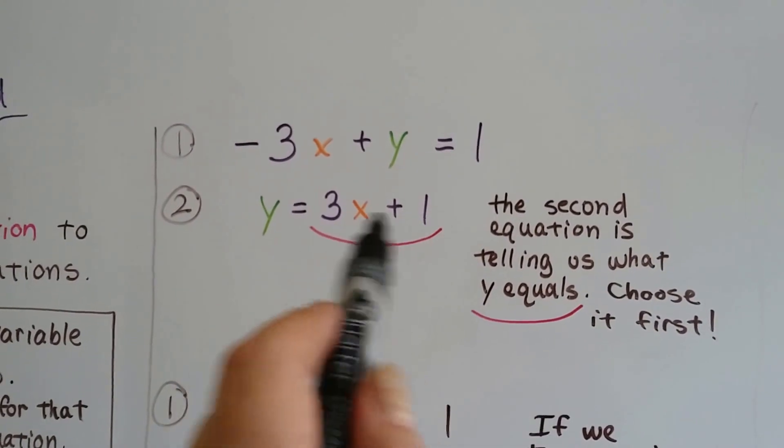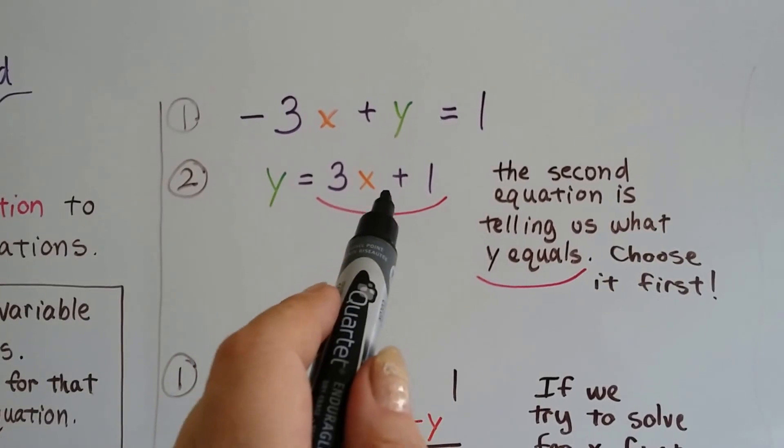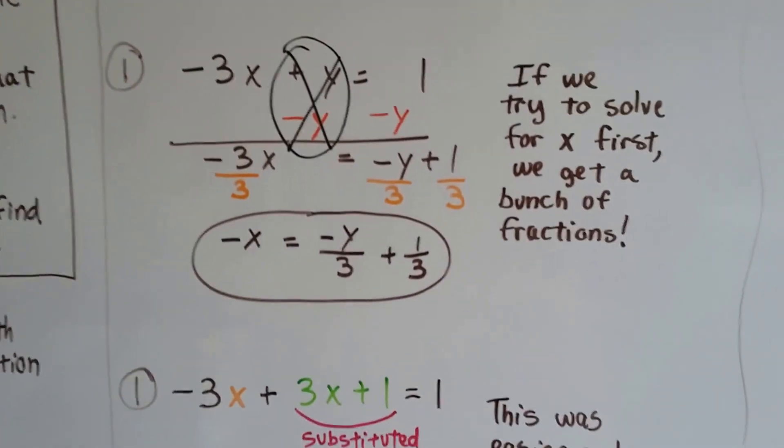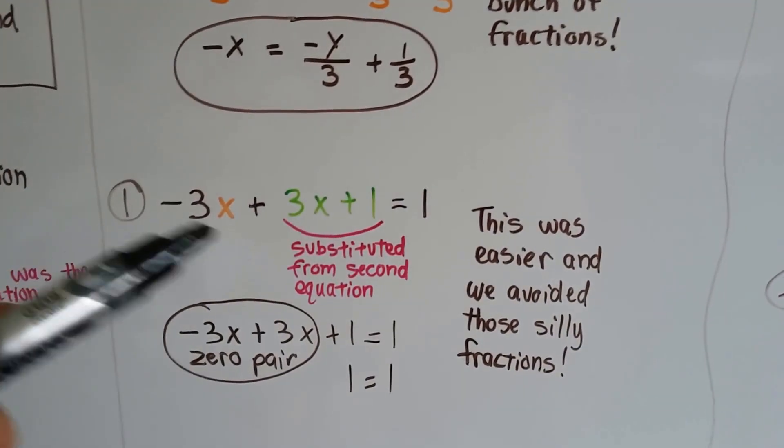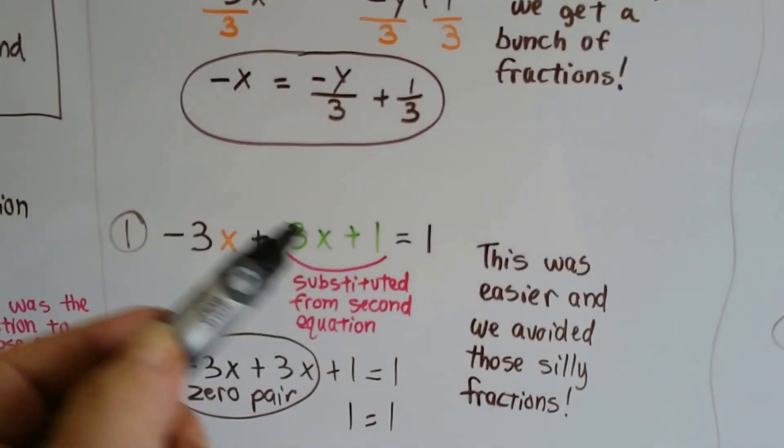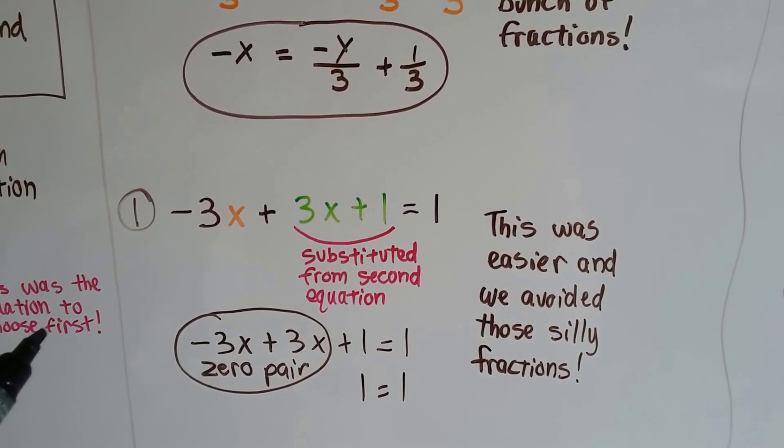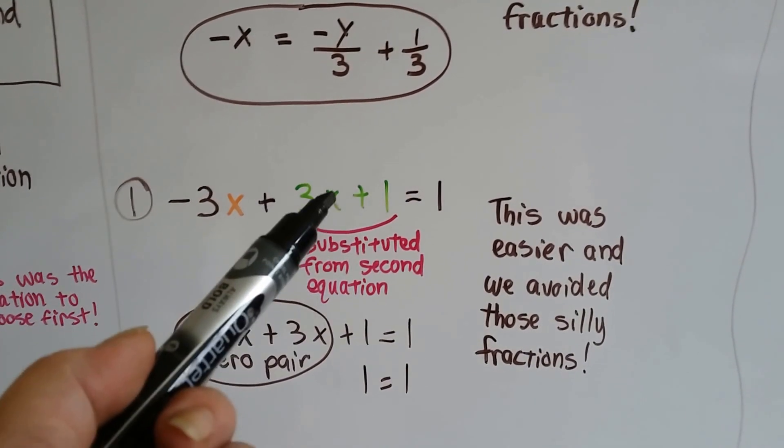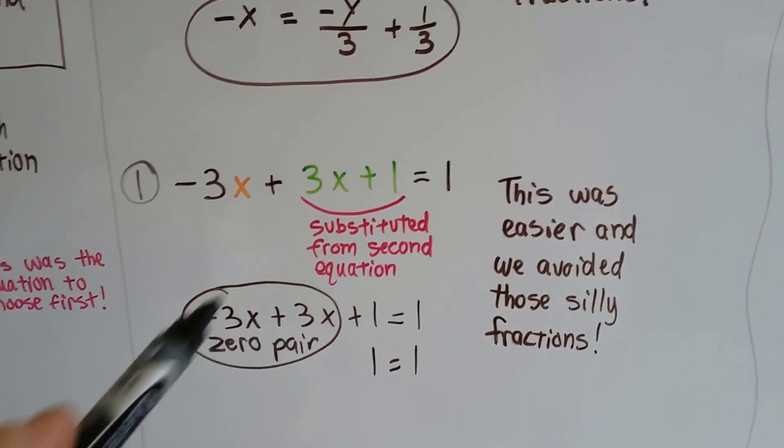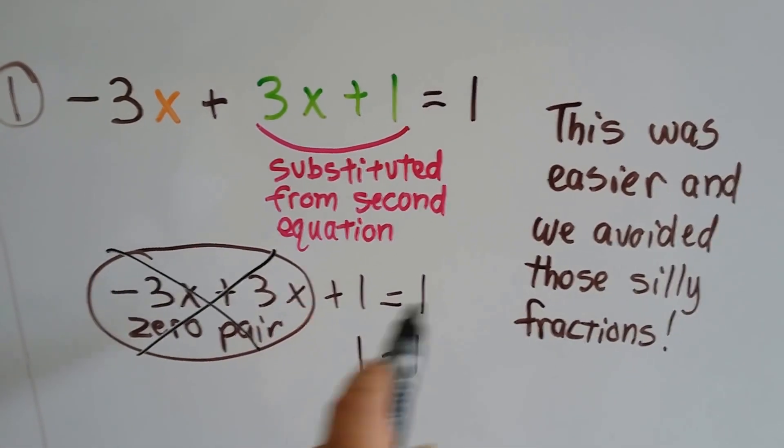So by choosing this one, it was smart to choose it first because not only was it telling us that y was equal to this, but if we had gone with this one and tried to solve it for x, we would have gotten a bunch of fractions. So this is easier. By substituting this 3x plus 1 right here for y from the second equation, we avoided those silly fractions. And we got -3x plus 3x. Well, that's a zero pair, isn't it? -3x plus 3x, so that canceled itself out, and all we were left with is 1 equals 1.